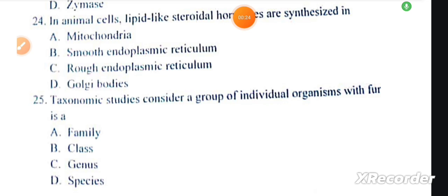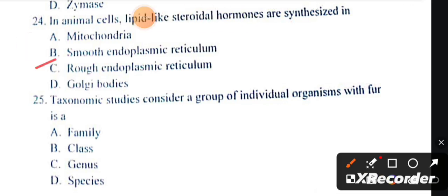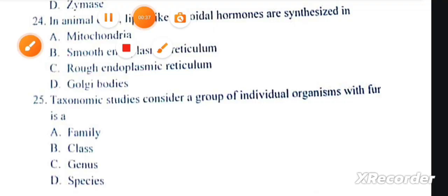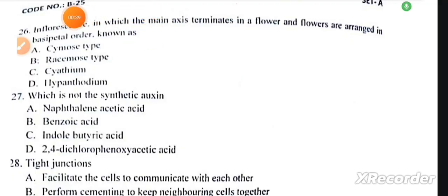Question number 24: In animal cells, lipid-like steroidal hormones are synthesized in smooth endoplasmic reticulum. Taxonomic studies consider a group of individual organisms known as species. Question number 26: Inflorescence in which the main axis terminates in a flower are known as cymose.